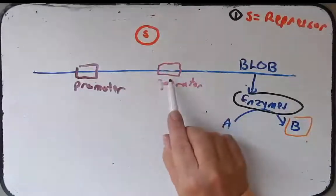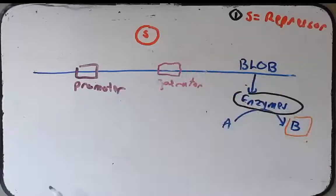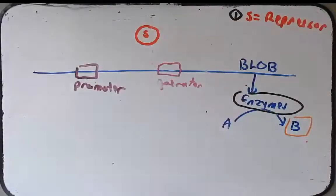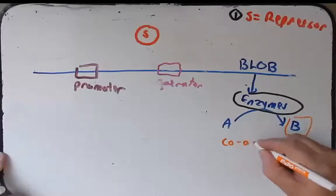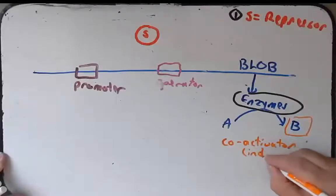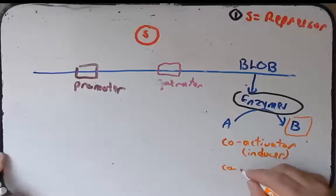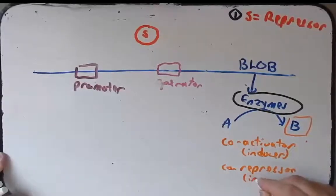It will be bound to the operator when the operon is off, and it will fall off the operator when the operon is on. We know to help regulate whether or not S will be on or off of the operator, it will have to interact with either a co-activator, also called an inducer, or it will interact with a co-repressor, also called an inhibitor.